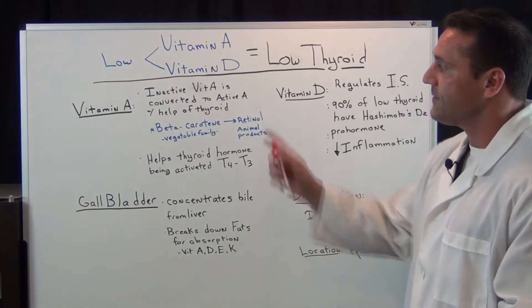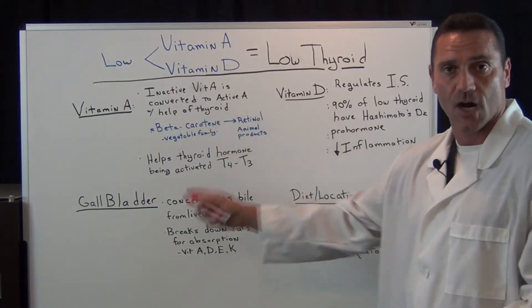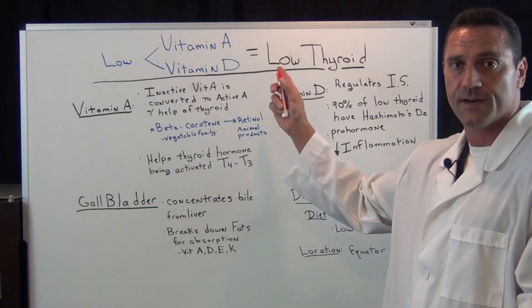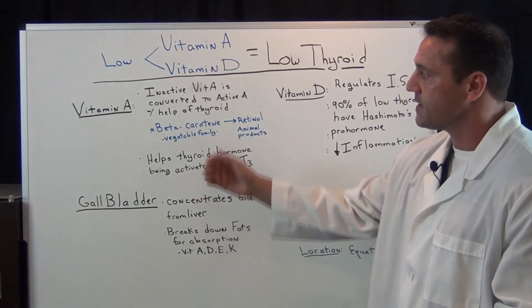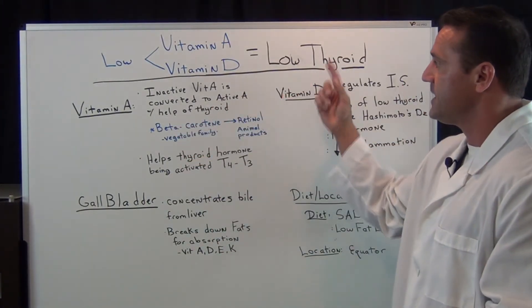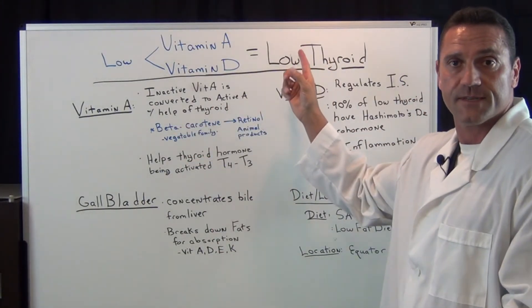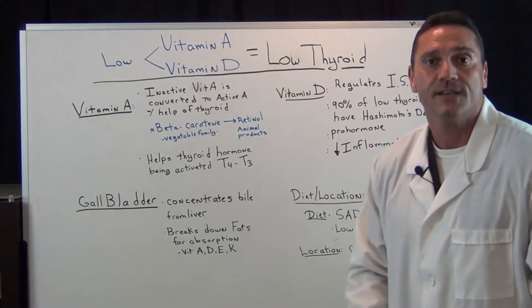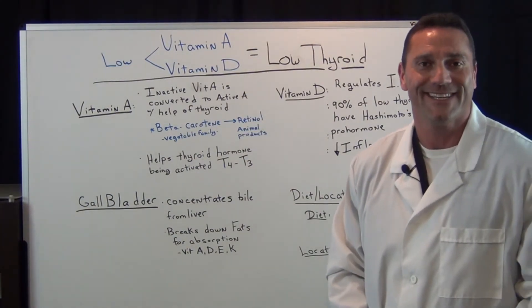So to summarize: vitamin A, vitamin D, and the gallbladder are all important for thyroid function. If you have a bad gallbladder, or if you're not taking in enough vitamin A and vitamin D, this is where you get low thyroid symptoms. I hope you enjoyed the video — thanks for watching.